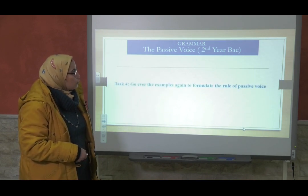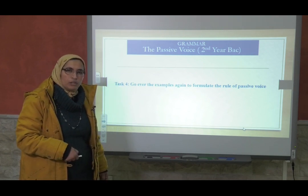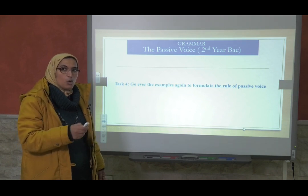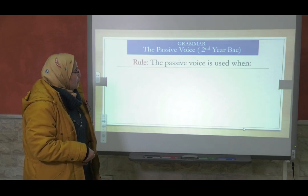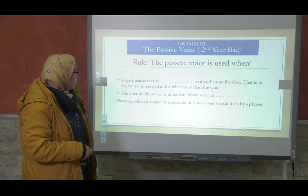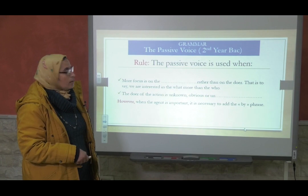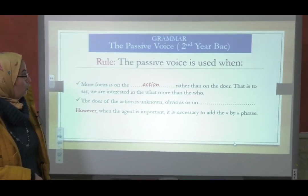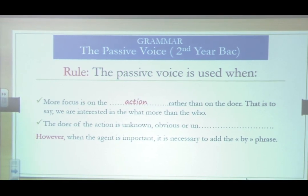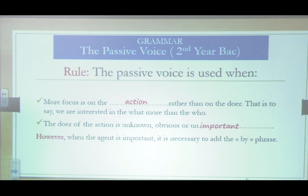Go over the examples again to formulate the rule of the passive voice. When do we use the passive voice, and what changes do we bring to the sentence to change it from active to passive? The passive voice is used when more focus is on the action rather than on the doer — you are interested in the 'what' more than the 'who.' The doer of the action is unknown, obvious, clear, or unimportant. However, when the agent is important, it is necessary to add the 'by' phrase.